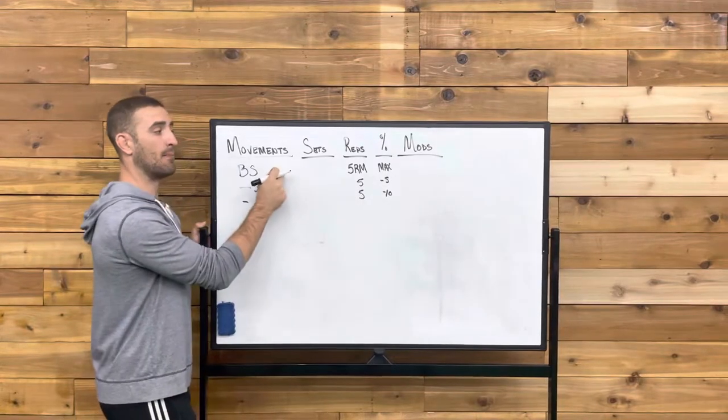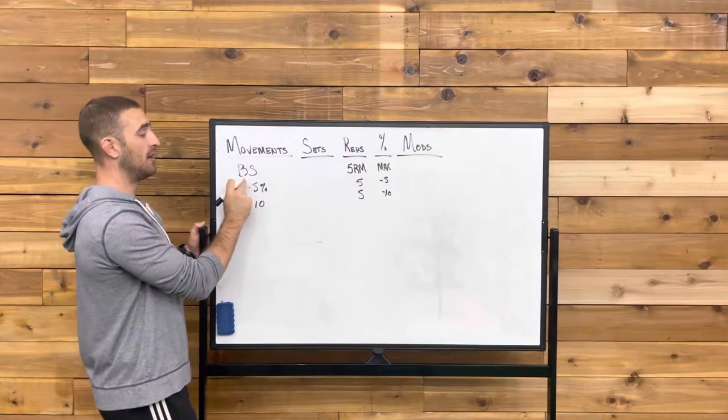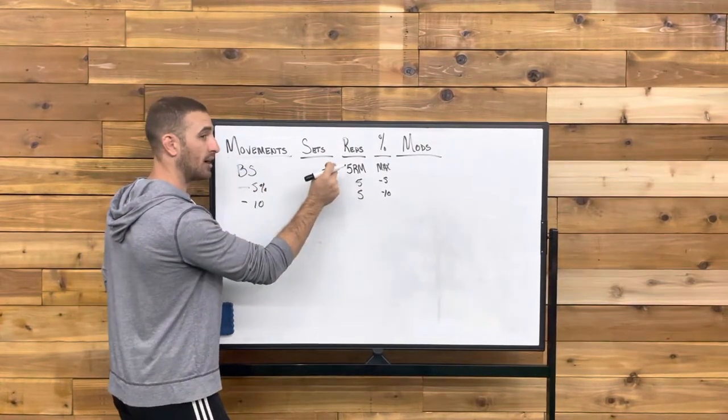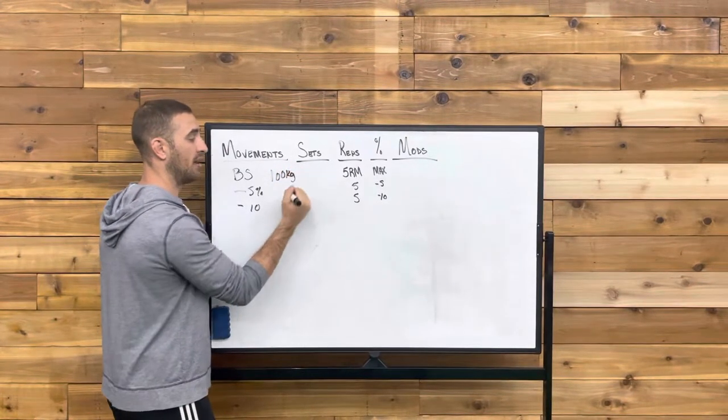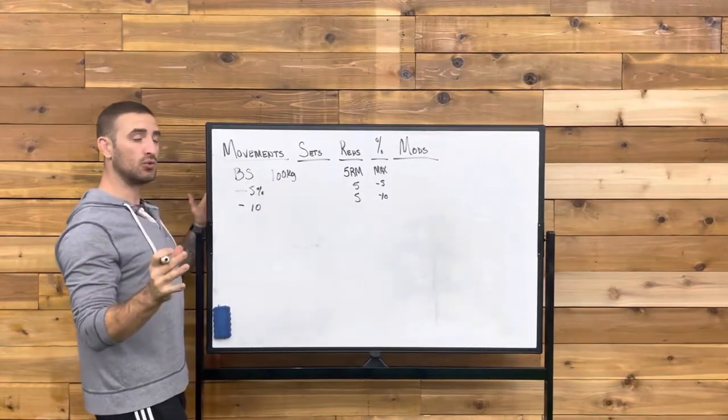These numbers are referencing the rep max that gets established. So let's say we were hitting five reps, loading the bar, and then we get up to 100 kilograms on our back squat for five reps. That's the most we can do with good technique.